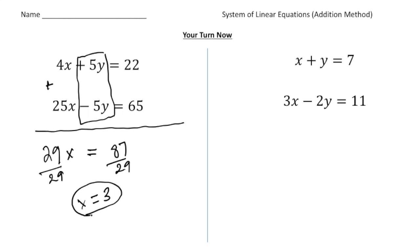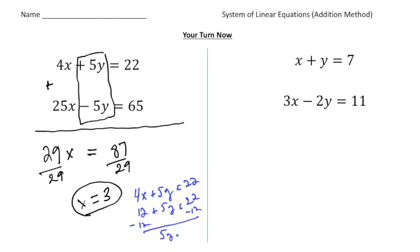We know x equals 3. Now to get the y value, take 3 and plug it into one of the equations. I'll rewrite the first equation: 4x plus 5y equals 22, replacing x with 3. So 4 times 3 gives you 12, and 12 plus 5y equals 22. Subtract 12 from both sides to get 5y equals 10, which means y equals 2. The solution to this system is x equals 3 and y equals 2.